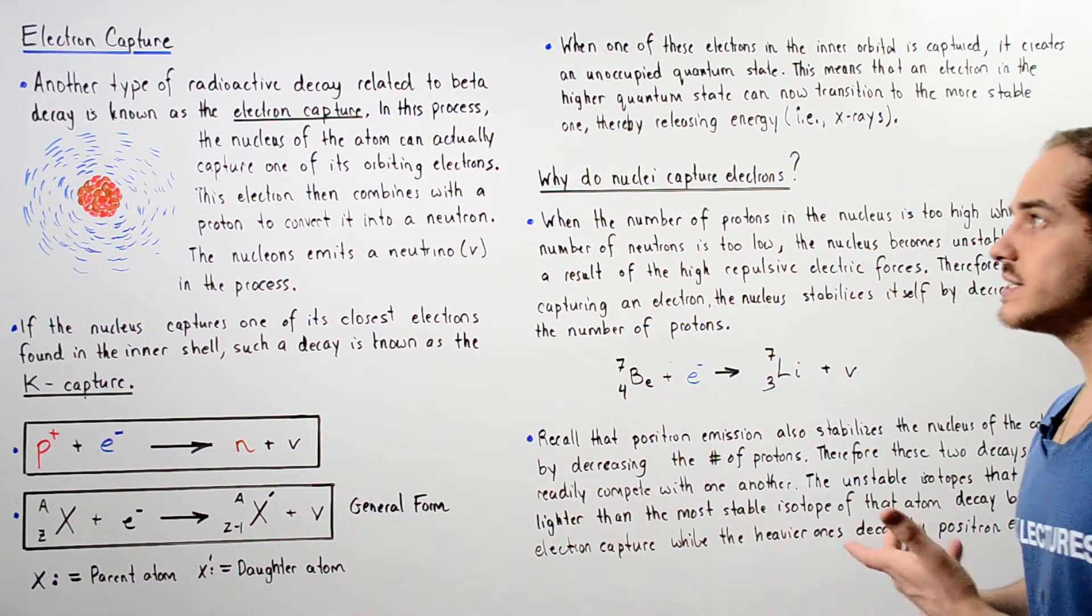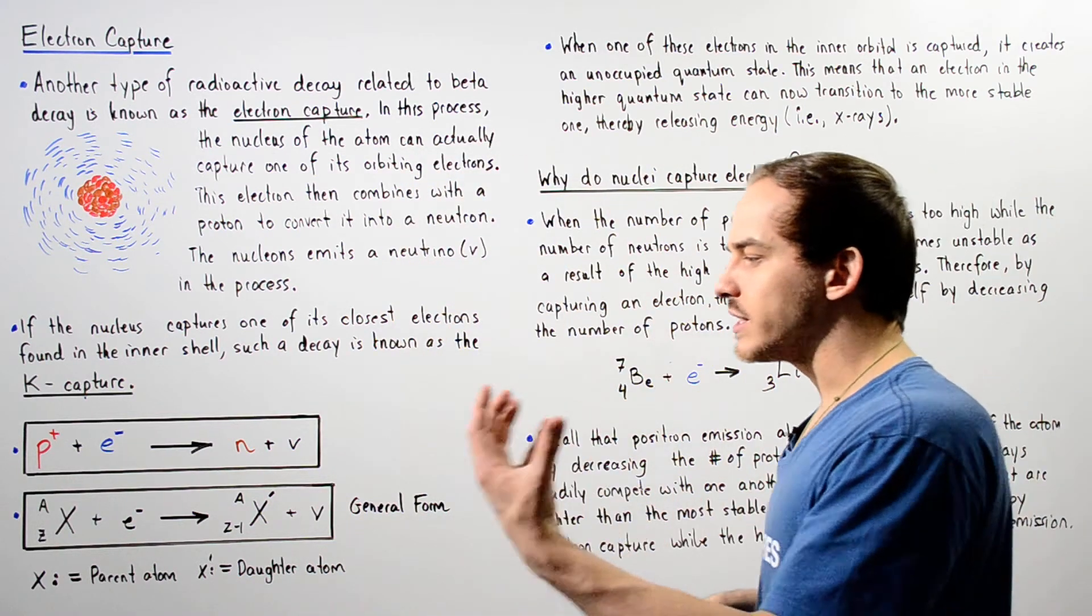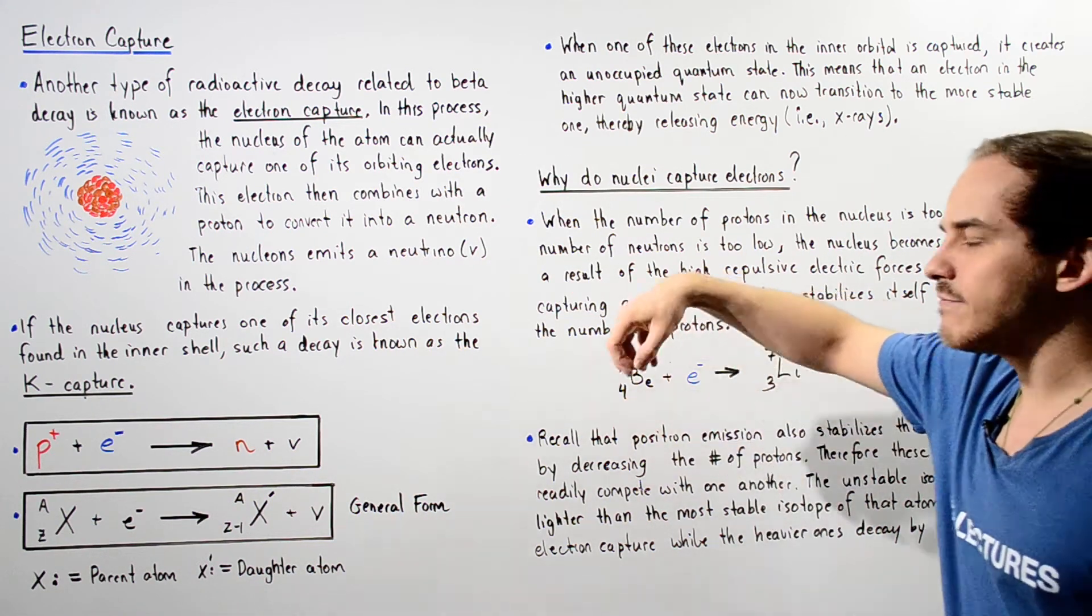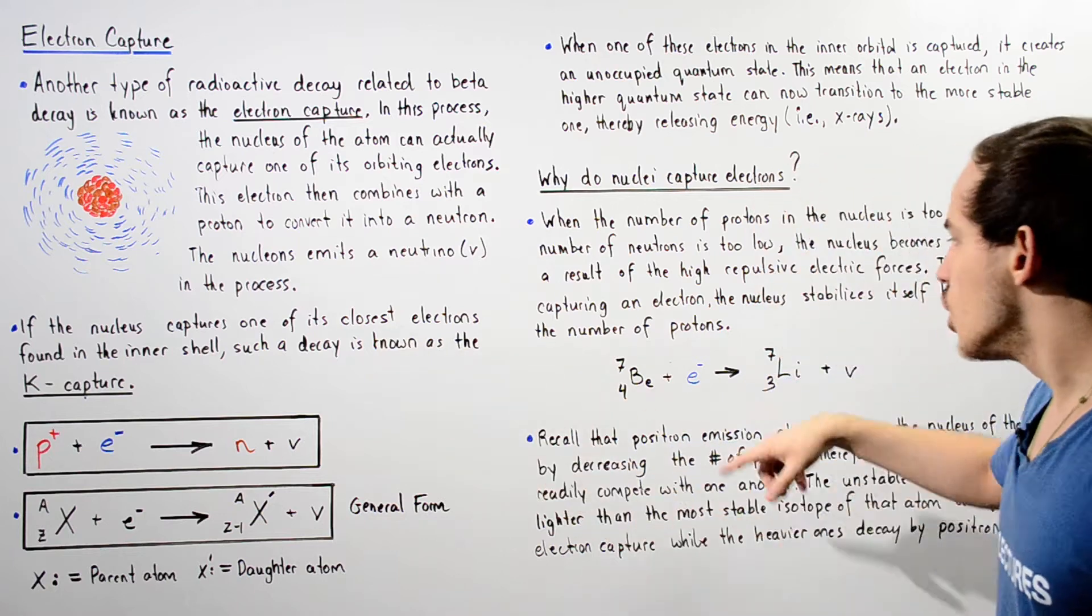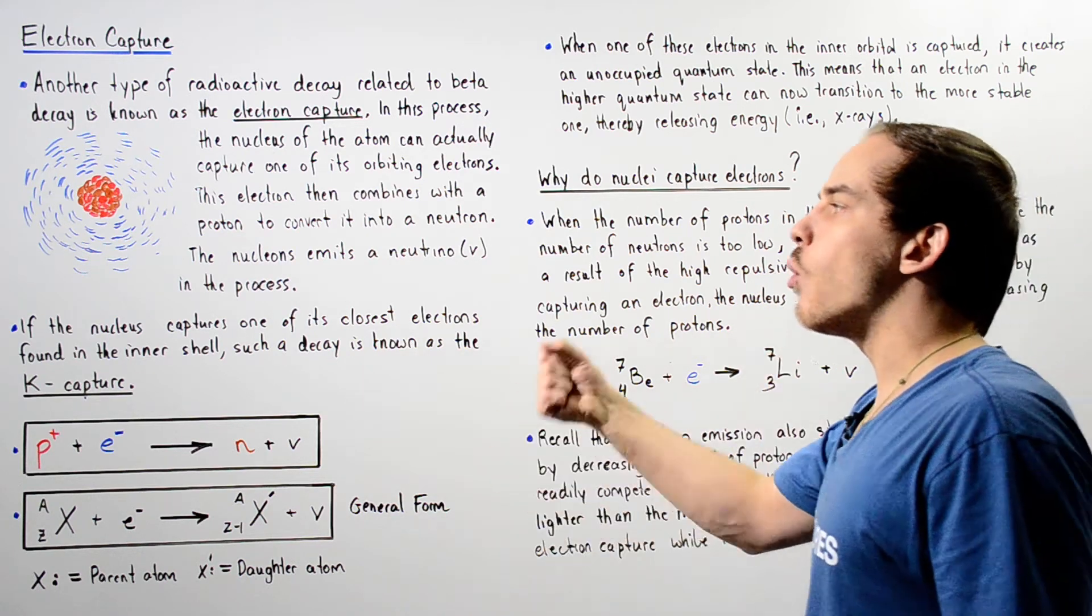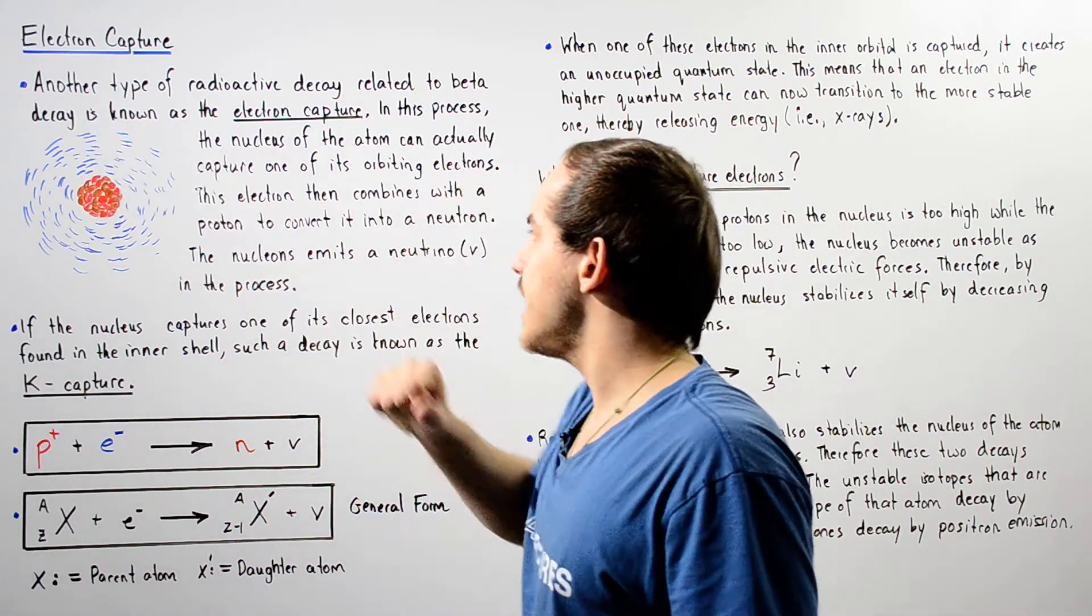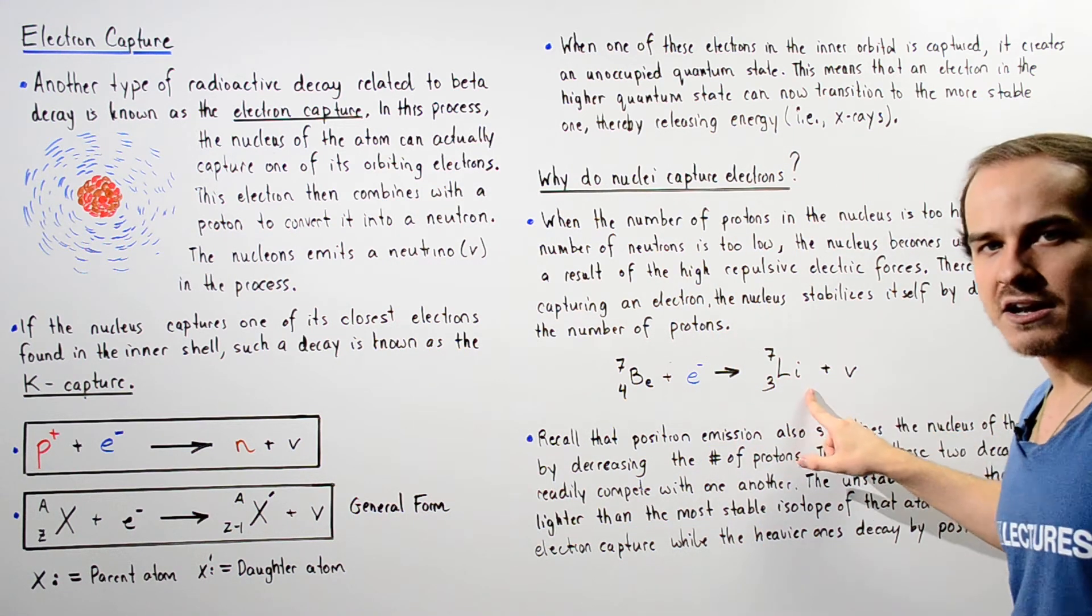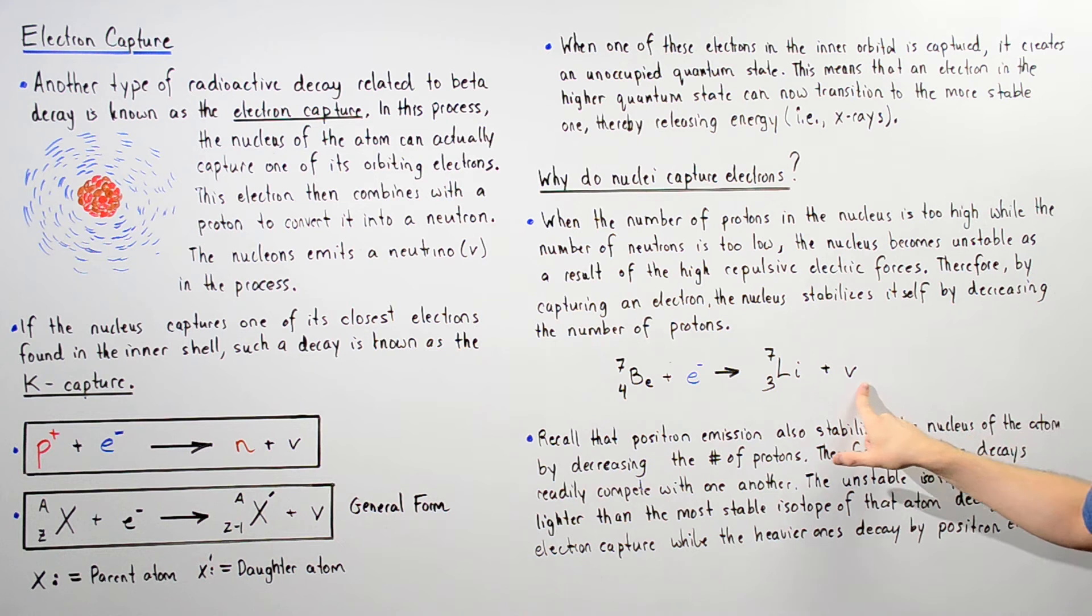And one particular example in which electron capture readily takes place is when the beryllium-7 isotope combines with an electron, takes one of those electrons in the inner shell and basically forms the lithium atom releasing our neutrino.